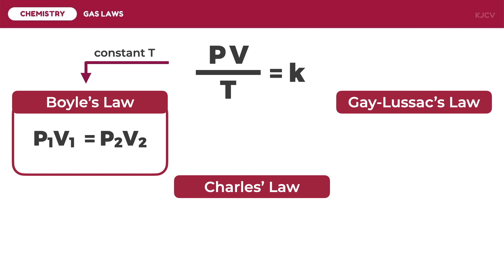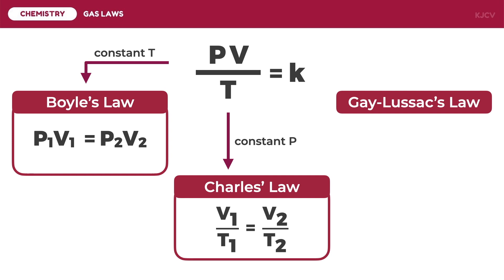In Charles' law, pressure is kept constant. It is written as the ratio of the initial volume to the initial temperature is equal to the ratio of the final volume to the final temperature: V1/T1 = V2/T2. Lastly, in Gay-Lussac's law, volume is kept constant. It is written as the ratio of the initial pressure to the initial temperature is equal to the ratio of the final pressure to the final temperature: P1/T1 = P2/T2.